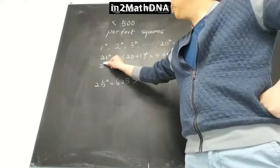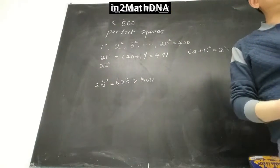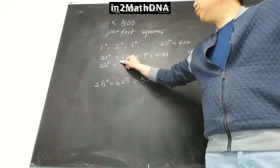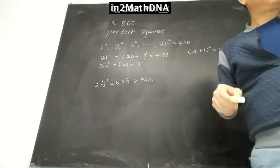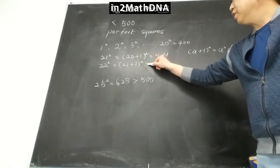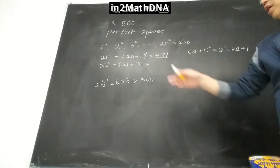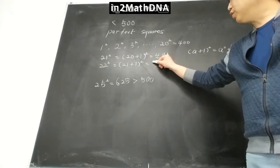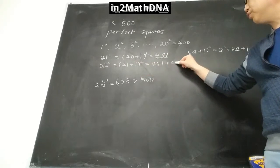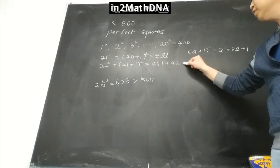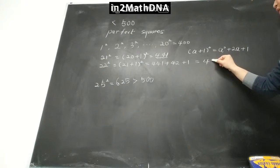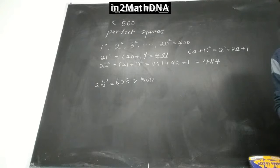For 22 squared, you can think of it as (21+1)². We already evaluated 21 squared, so we use 21 squared which is 441, plus twice 21 which is 42, plus 1. So 22 squared is 484.